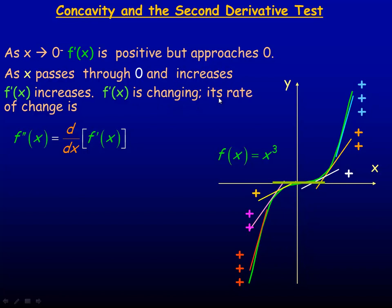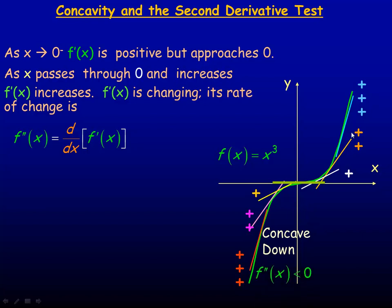The rate of change of the first derivative is called the second derivative. So f double prime is defined to be the derivative of the first derivative. Now, where the first derivative is getting smaller and the tangent lines are above the curve, the graph is said to be concave down — it sort of opens down here. Where the first derivative is getting larger and increasing, the graph is said to be concave up.